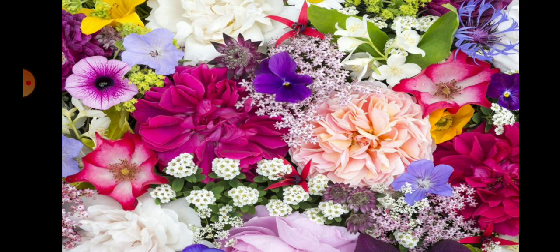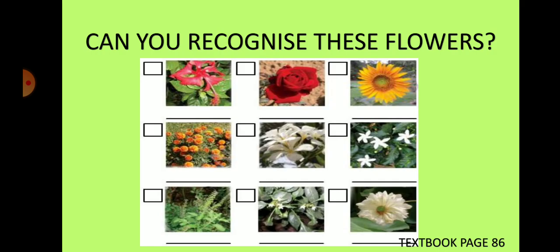Children, all of you know that flowers are very beautiful. They are of different colors. Today, let us observe some flowers. This is a page from your textbook, page number 86. Here, pictures of a few flowers are given. Can you recognize these flowers?